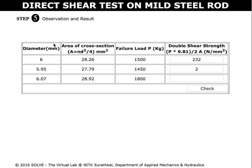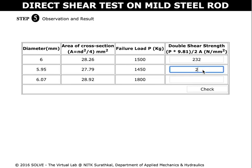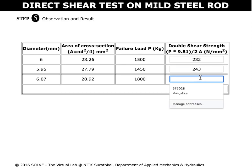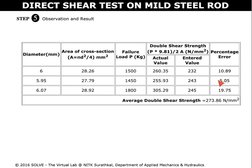These are the observations of the three trials. We can enter the calculated value here and check for the values. The percentage error shows the difference in the actual and entered value. Average double shear strength is found.